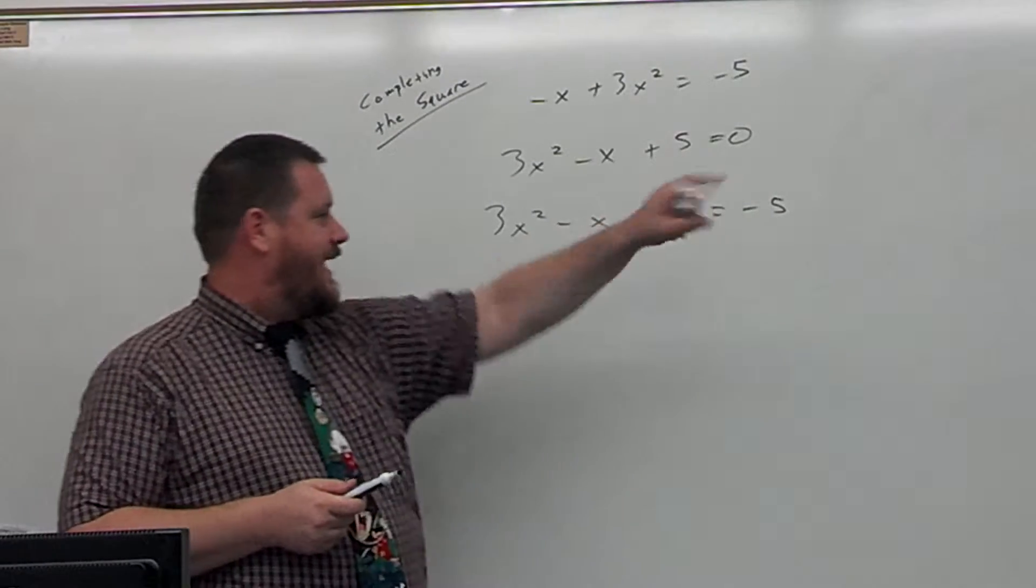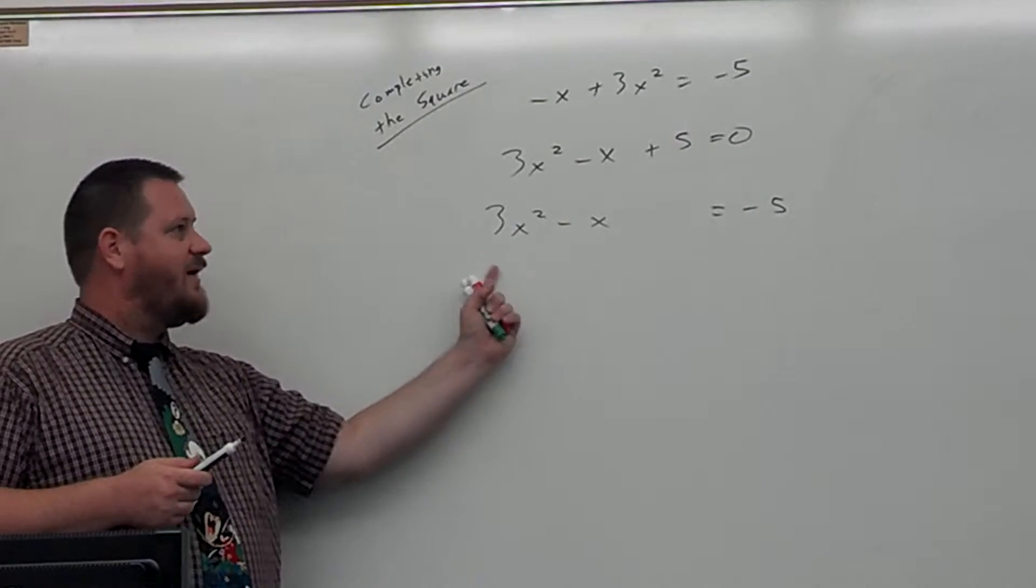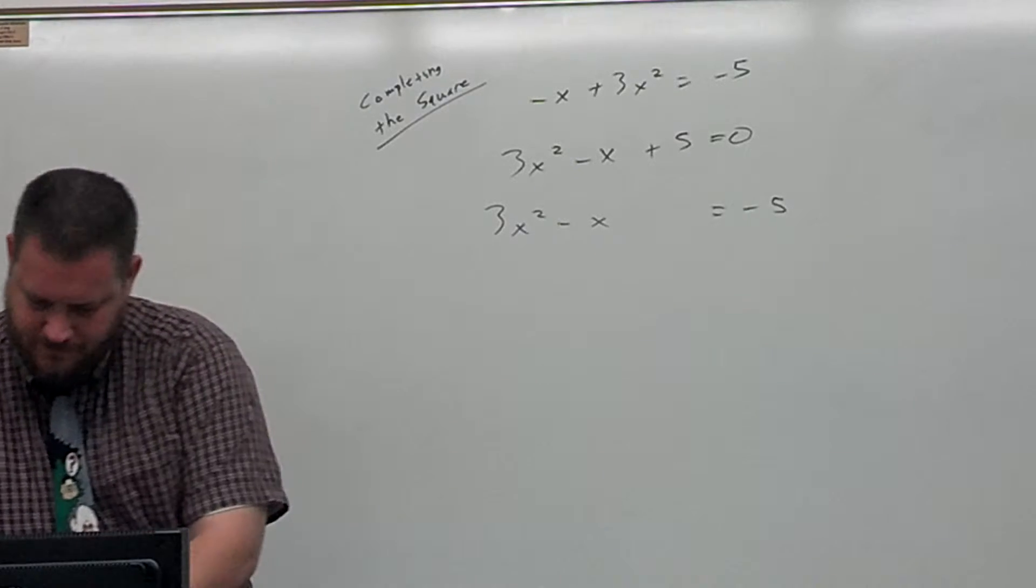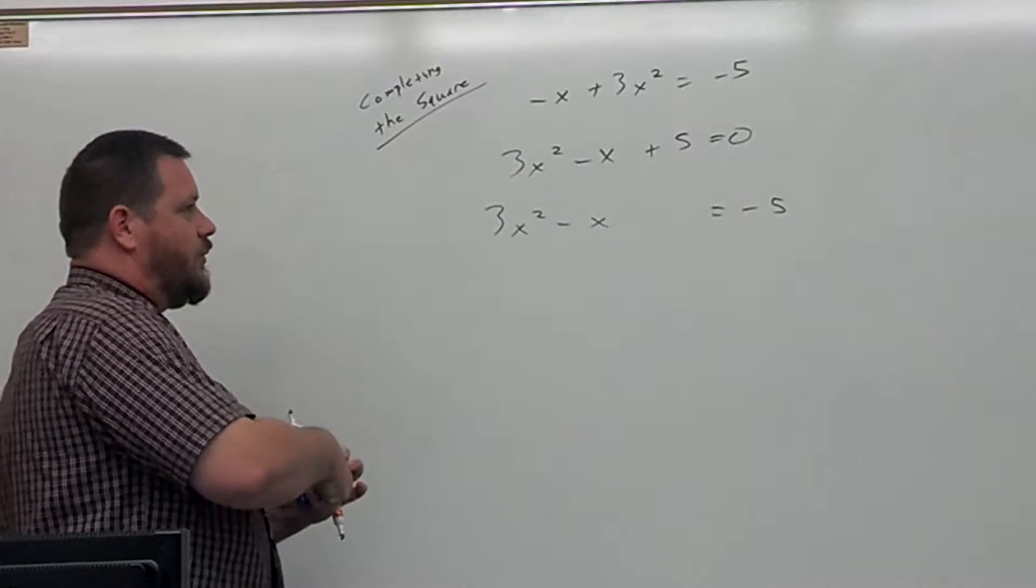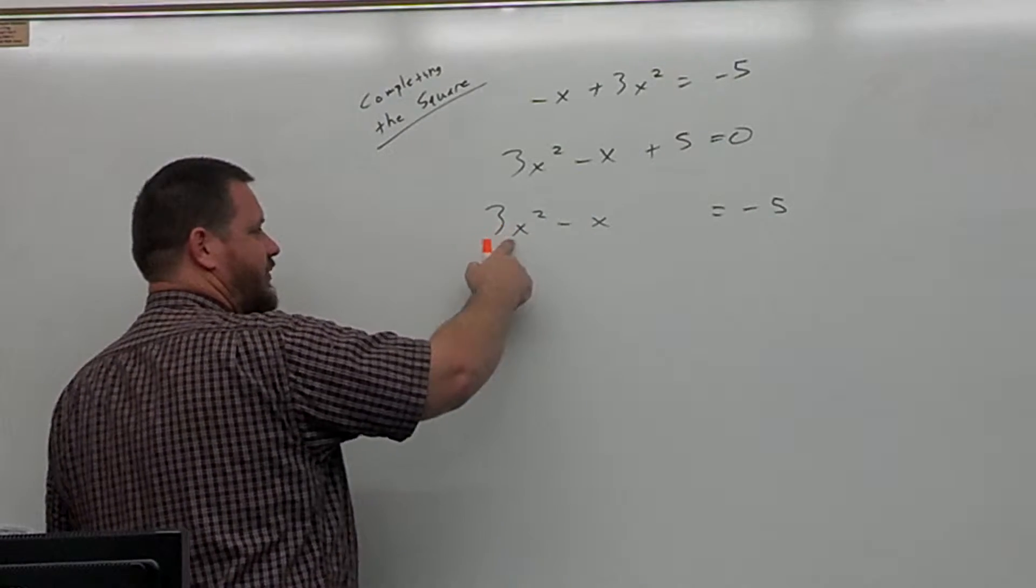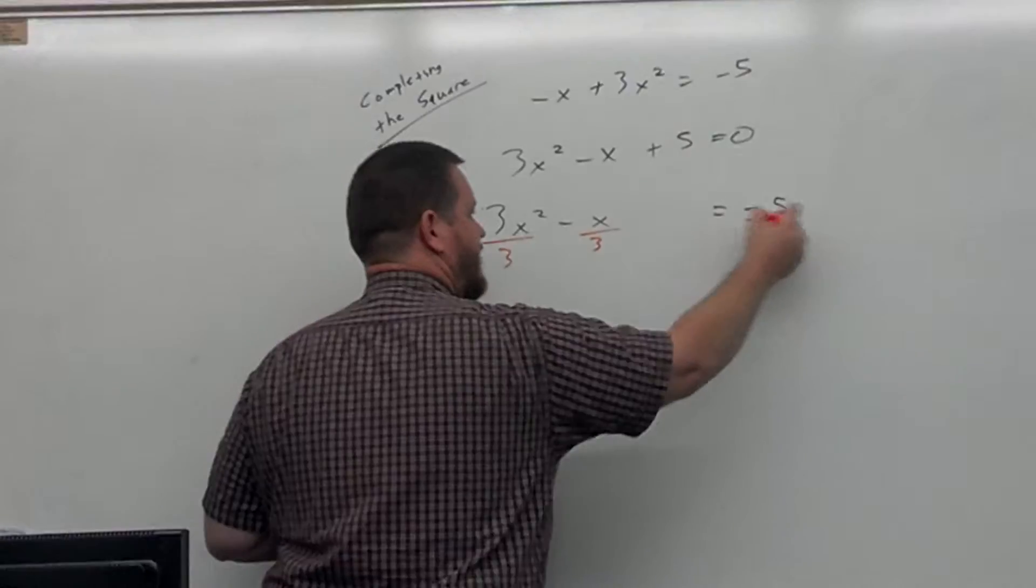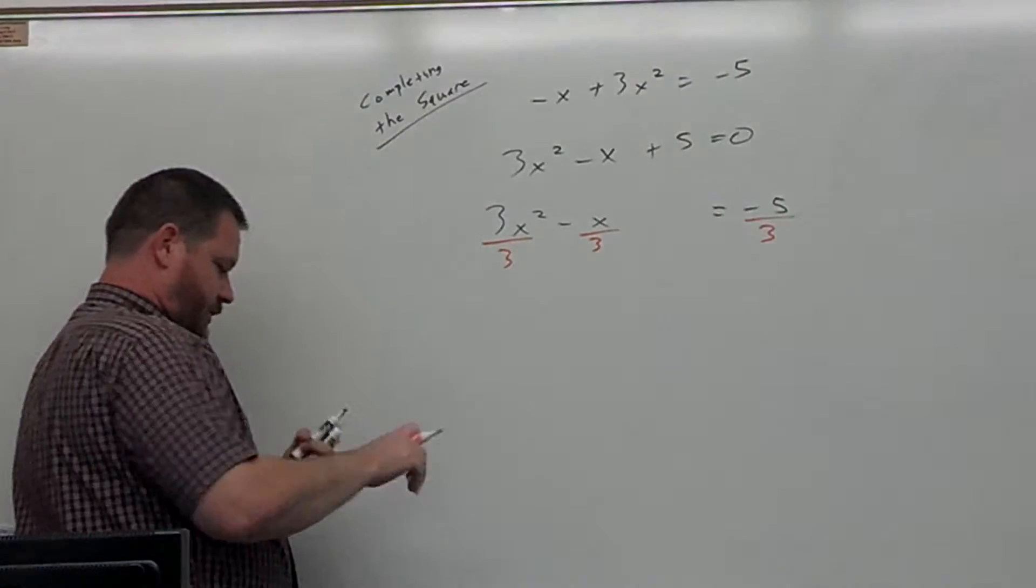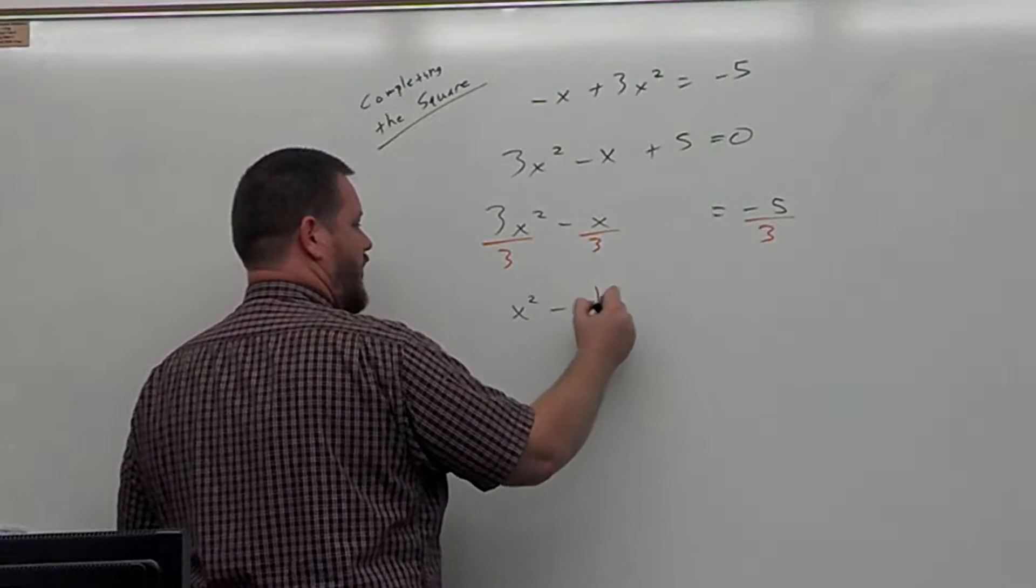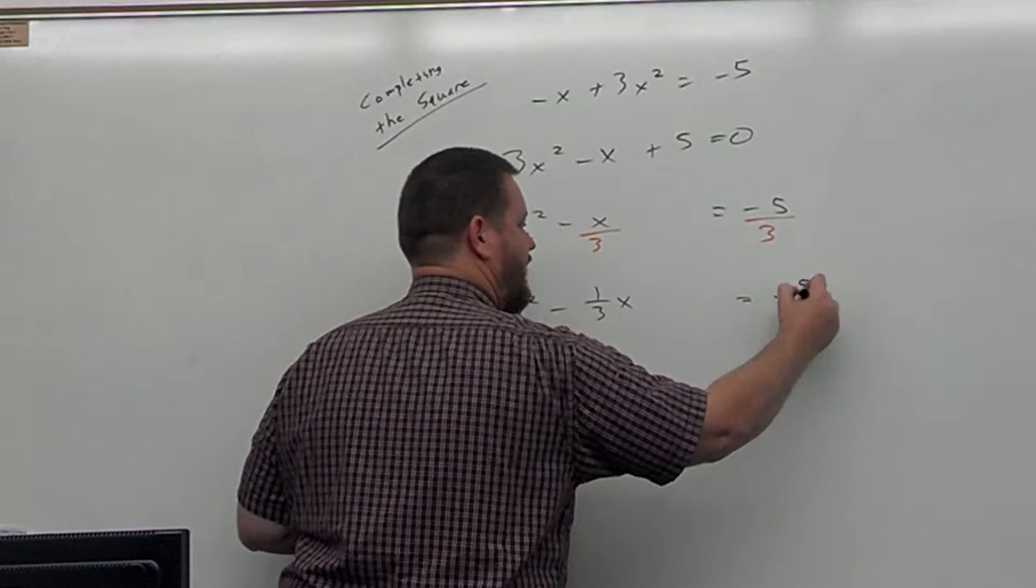Now the step that's not in that list here is if you have a number in front of the x squared term, you have to get rid of that. So what we're going to do is we're going to divide everything by 3, because that's what's in front of the x squared term. So divide everything by 3, and what we have now, we have x squared minus 1 third x equals negative 5 thirds.